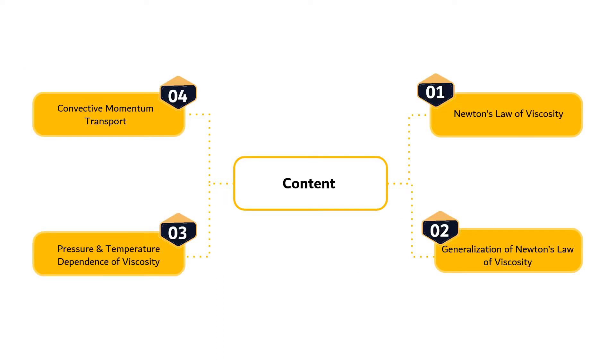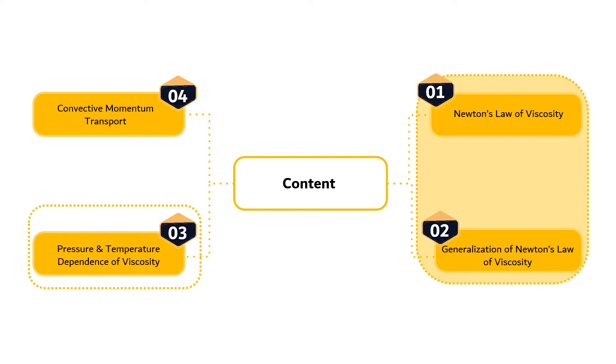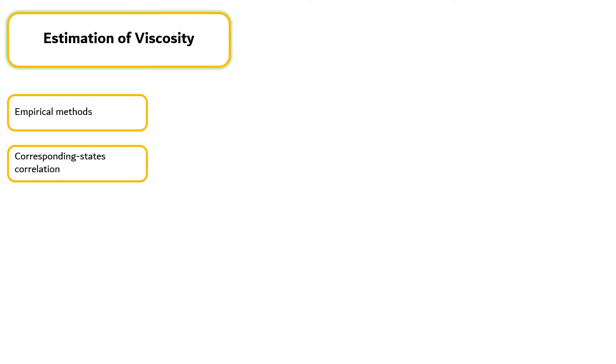Previously, we have discussed about Newton's Law of Viscosity and generalization of Newton's Law of Viscosity. In this segment, we will discuss about pressure and temperature dependence of viscosity. When experimental data are lacking and there is no time to obtain them, the viscosity can be estimated by empirical methods, making use of other data on the given substance. We shall discuss a corresponding states correlation which facilitates estimation of viscosity and illustrates general trends of viscosity with temperature and pressure for ordinary fluids.